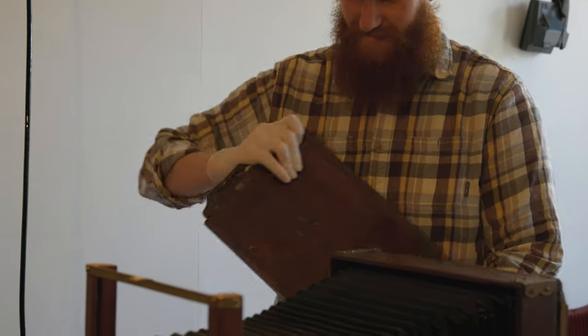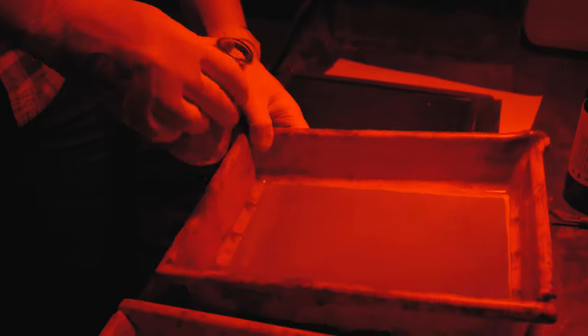Once the image is taken we can go into the dark room and start the development process. At this point you'll see the negative of the image start to appear on the plate. This will give you an idea of what the final image will look like.